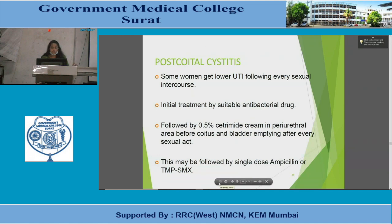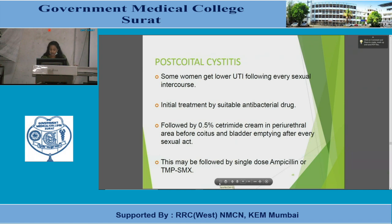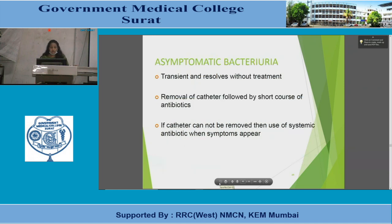Management of postcoital cystitis: some women develop lower UTI after every sexual intercourse. Initial treatment with a suitable antibacterial drug, followed by 0.5% cetrimide cream in the periurethral area before coitus and bladder emptying after every sexual act. This may be followed by a single dose of ampicillin or trimethoprim-sulfamethoxazole.